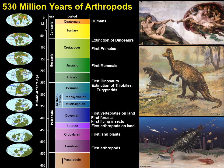To review: arthropods appeared in the fossil record more than half a billion years ago. They were the first animals to colonize the land, a few tens of millions of years behind the first land plants. They were the first to fly. They suffered the loss of both trilobites and eurypterids at the end of the Permian, about a quarter of a billion years ago — that was, of course, the greatest mass extinction in history.